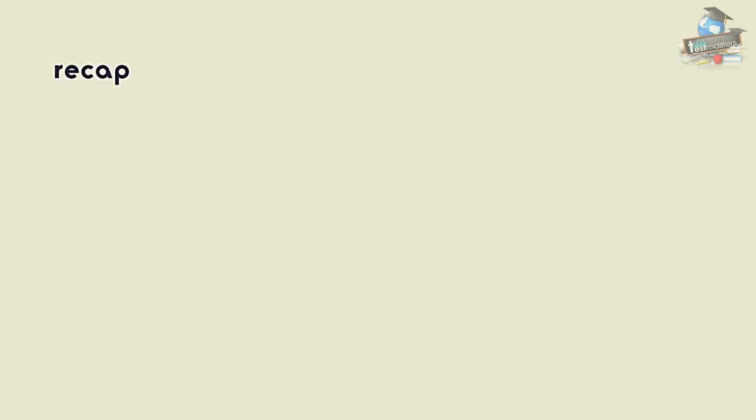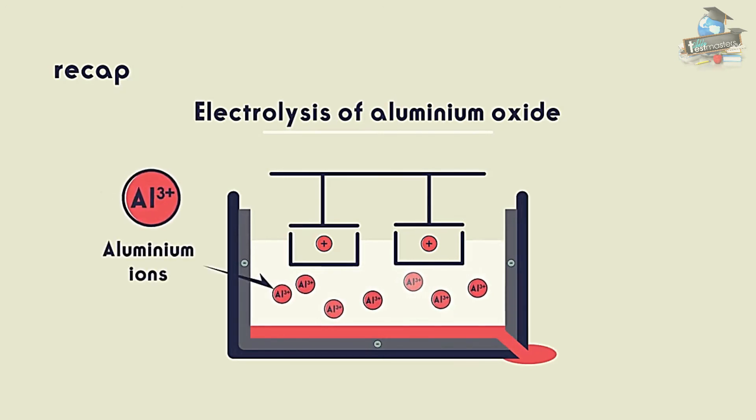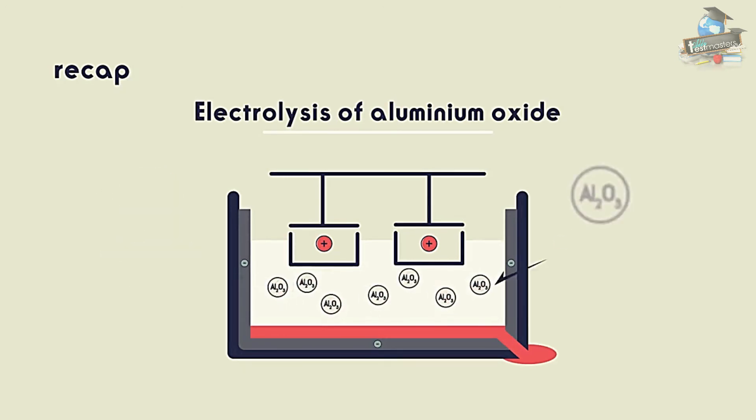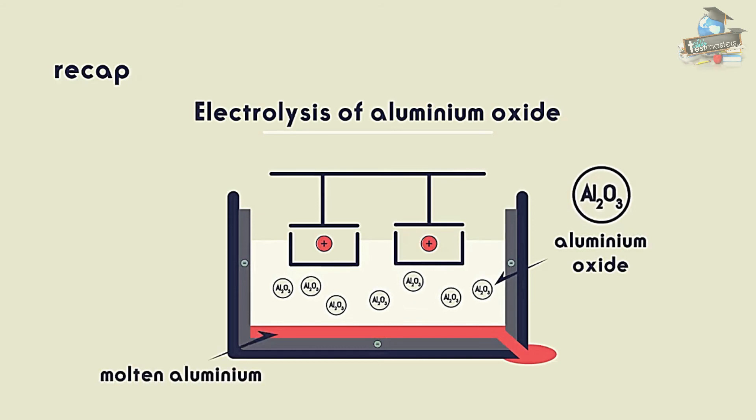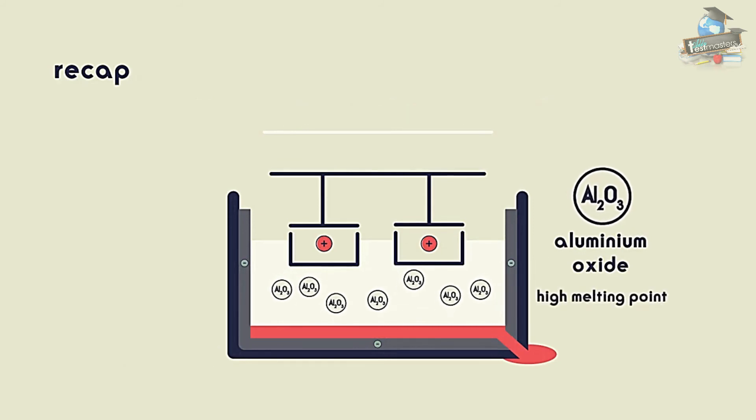So from this video you should know that to extract aluminium, electrolysis is used. Aluminium oxide needs to be molten for the ions to move through it and so is dissolved in cryolite to lower the melting point.